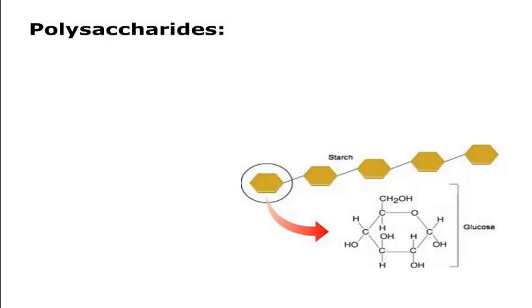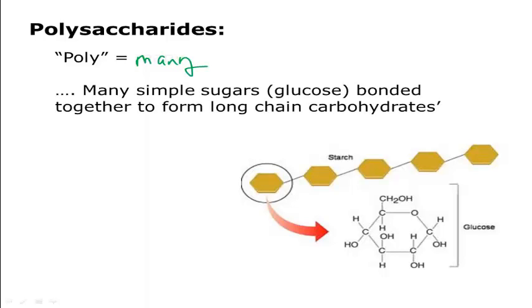So the next part of that objective is to recognize polysaccharides. Poly simply means many. And what we're talking about here is many simple sugars, glucose, all stuck together, bonded together to form long chain carbohydrates. Polysaccharides. The polysaccharides you need to know basically include starch, and cellulose, and glycogen. Starch, you can see here, you can see the monomers that make it up. So if you take these monomers like glucose, and you attach them together into a long chain, you're going to have a molecule of starch.